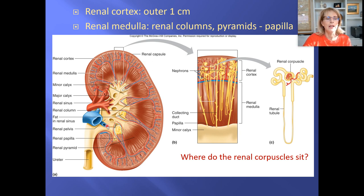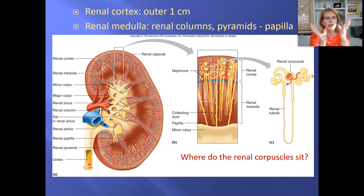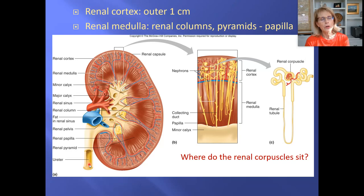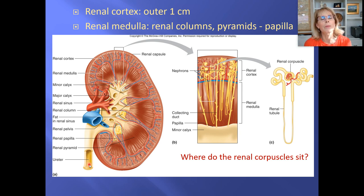The ureter is the narrow tube — the renal pelvis acts as a funnel that sends urine down the ureter. From the ureter, urine goes into the urinary bladder. We call it the urinary bladder rather than just the bladder because we also have a gallbladder. From the urinary bladder, urine exits through the urethra.